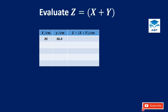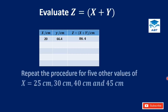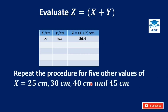At this part of the question, we are to evaluate Z equals X plus Y. So 20 centimeters plus 66.4 centimeters is equal to 86.4 centimeters. We are to repeat the procedure for five other values of X: 25 centimeters, 30 centimeters, 40 centimeters, and 45 centimeters.